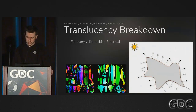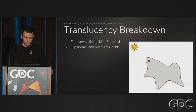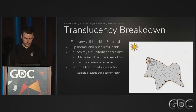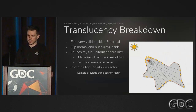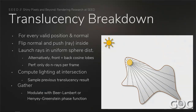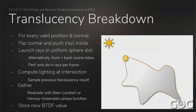Here's a breakdown of how we compute translucency. For every valid position and normal, we flip the normal and push the ray just inside the surface. We then launch rays in a uniform sphere distribution — you can do as many rays as you want per frame; we only do one, and that's fine. We compute lighting at the intersection, sample previous translucency results, then gather and modulate that with your favorite phase function, whether it's Beer-Lambert or Henyey-Greenstein. And then you have a new translucent result.